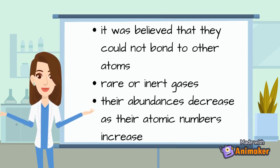When the members of the group were discovered and identified, they were thought to be exceedingly rare, as well as chemically inert, and therefore we call them rare or inert gases.